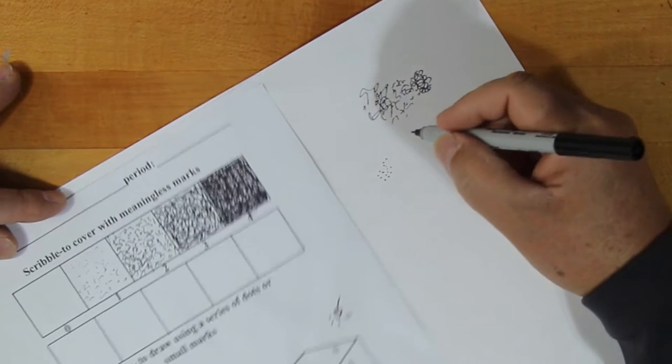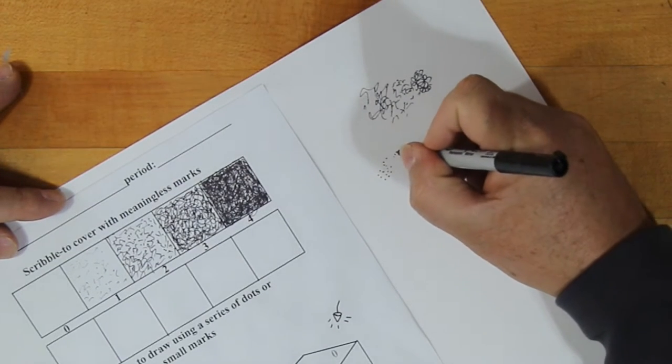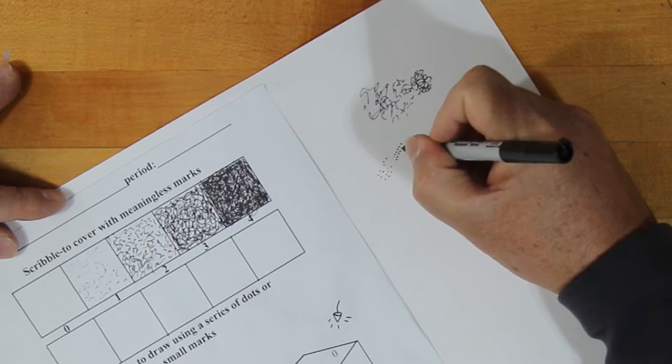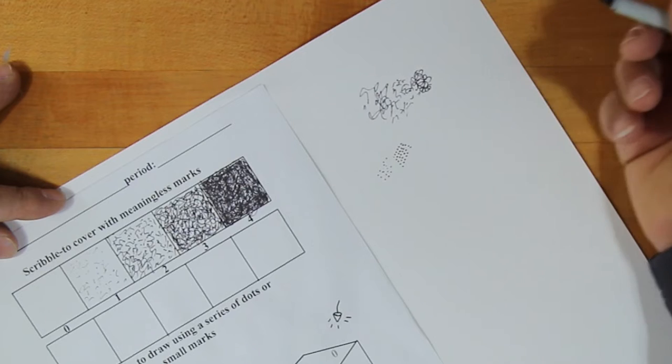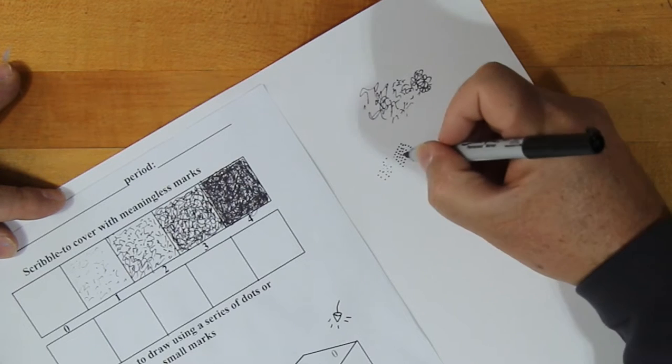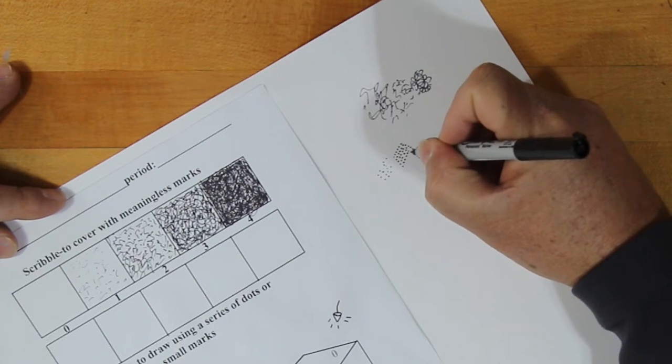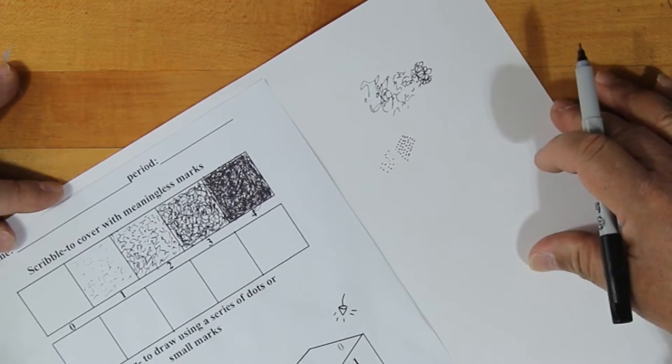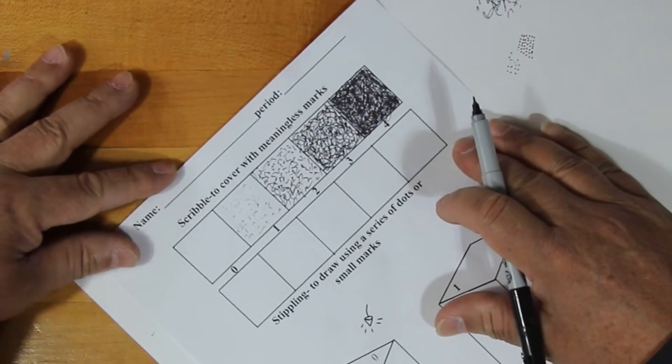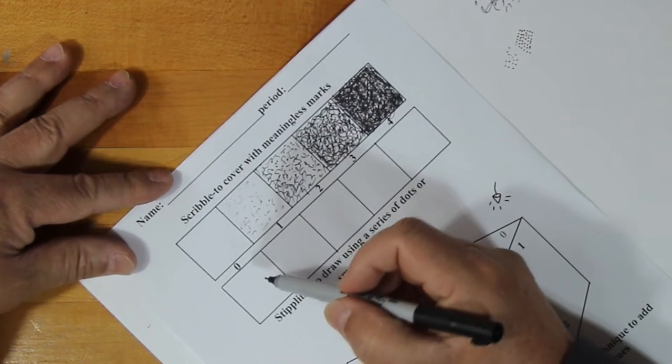The other thing that you want to avoid is you don't want to create patterns. So when you start doing the stippling, we want to do them a little bit more random. There are times where we actually do use these for patterns. But for this exercise, I want you to keep it fresh. So let's take a look on this side. Zero. Once again, we're going to leave that one blank.